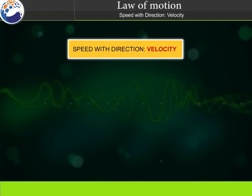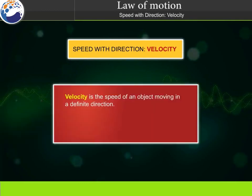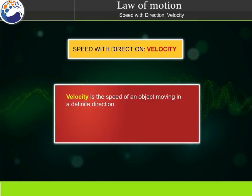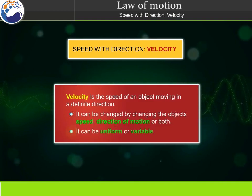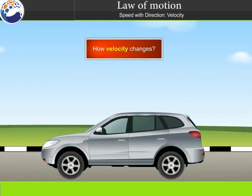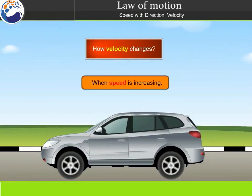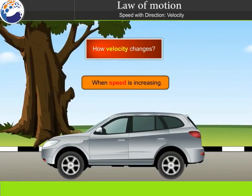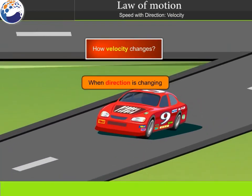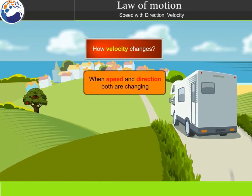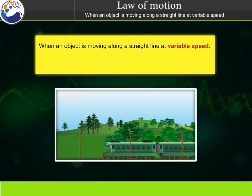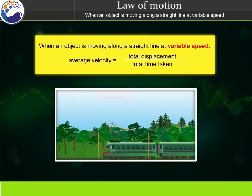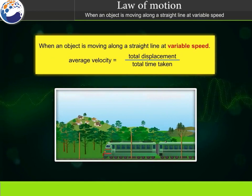Speed with direction is called velocity. Velocity is the speed of an object moving in a definite direction. It can be changed by changing the object's speed, direction of motion, or both. It can be uniform or variable. When an object is moving along a straight line at variable speed, average velocity equals total displacement divided by total time taken.